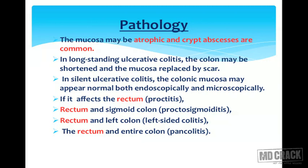In silent ulcerative colitis, the colonic mucosa may appear normal both endoscopically as well as microscopically. If it affects the rectum, it is called proctitis. If it affects the rectum and sigmoid colon, then it is known as proctosigmoiditis.